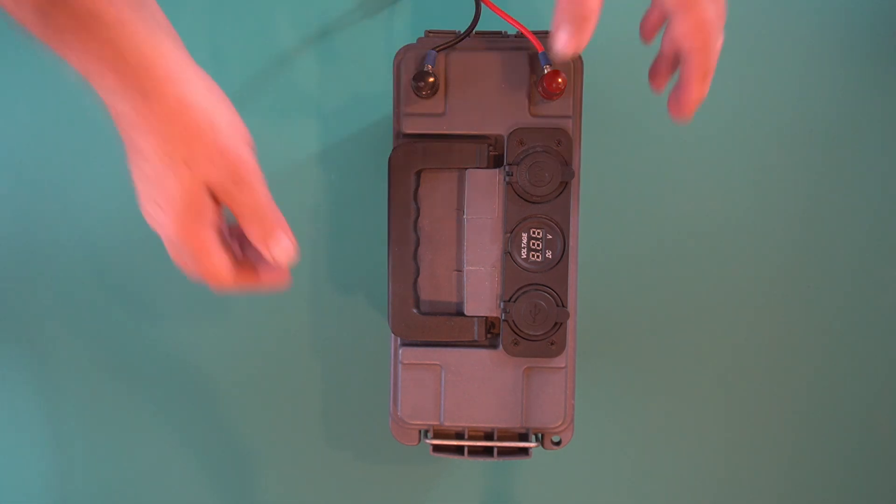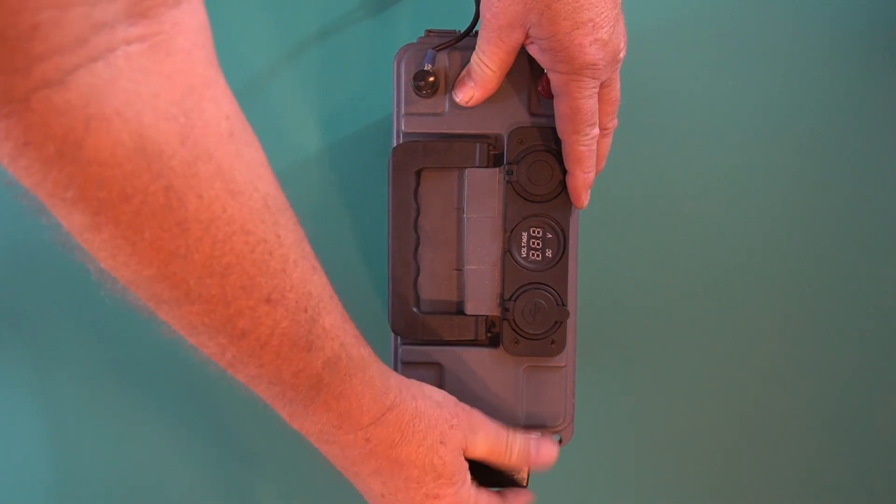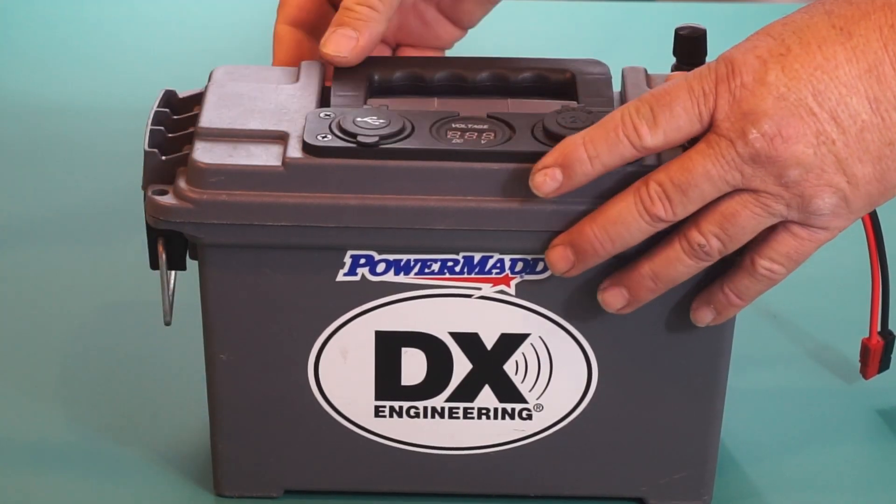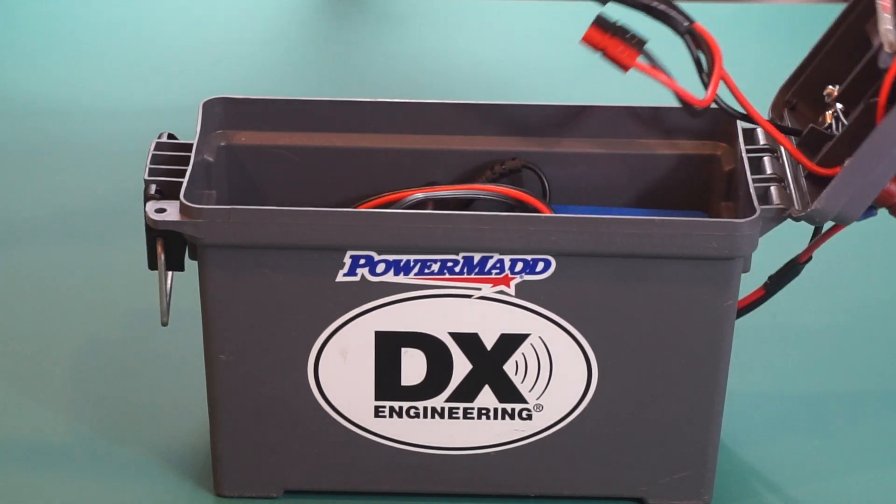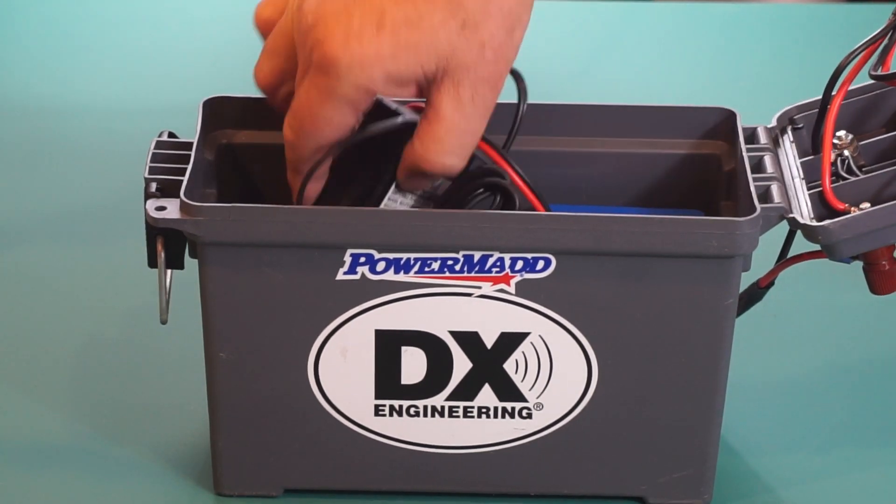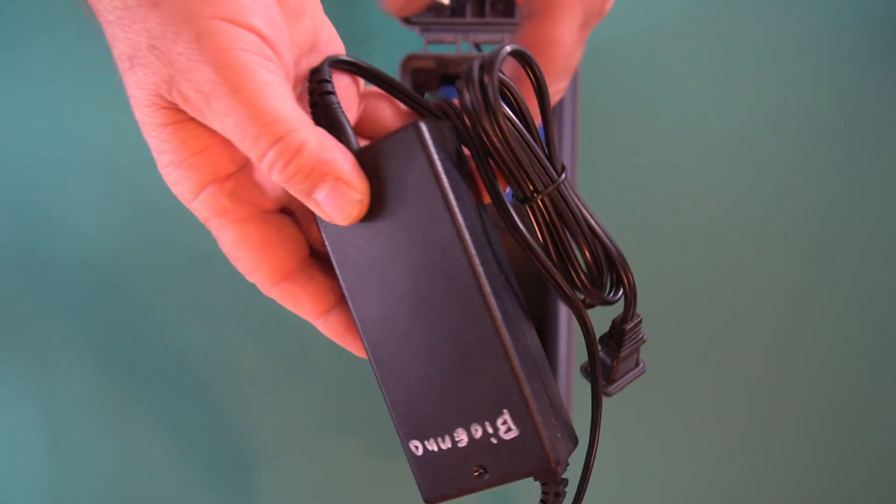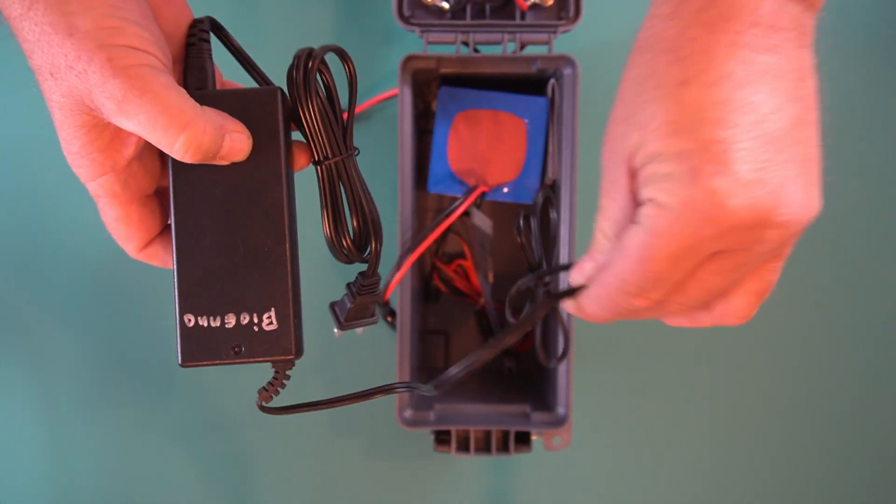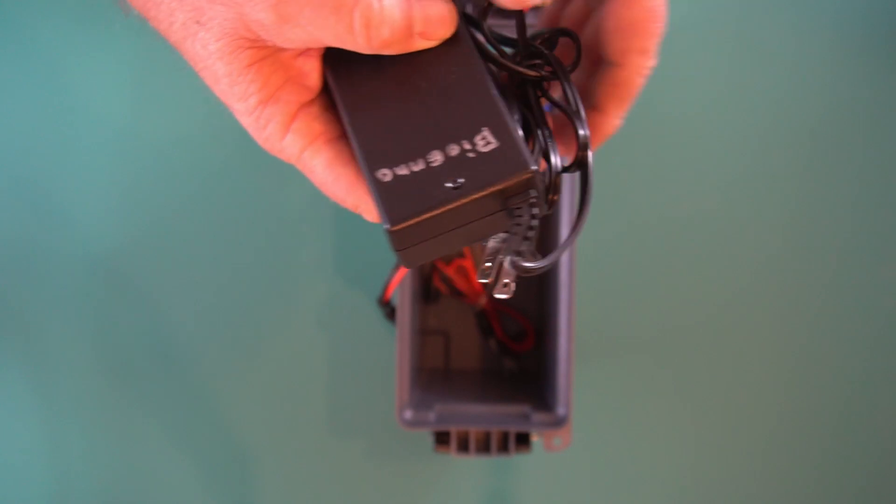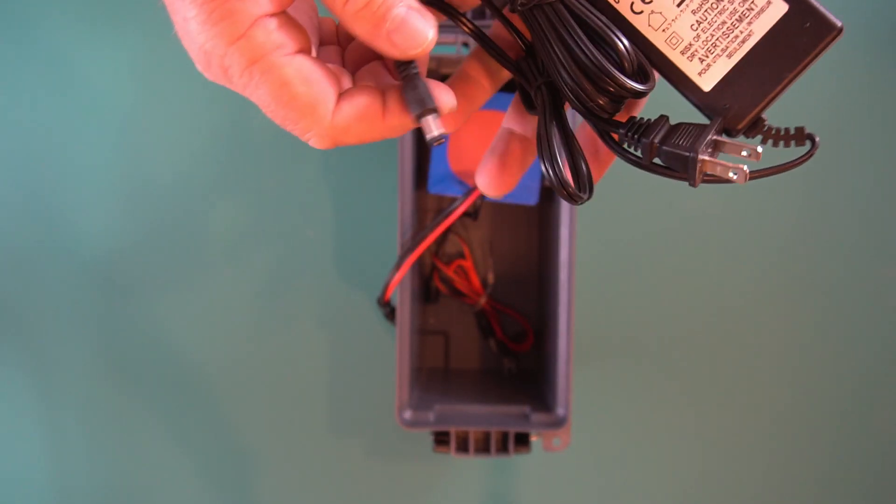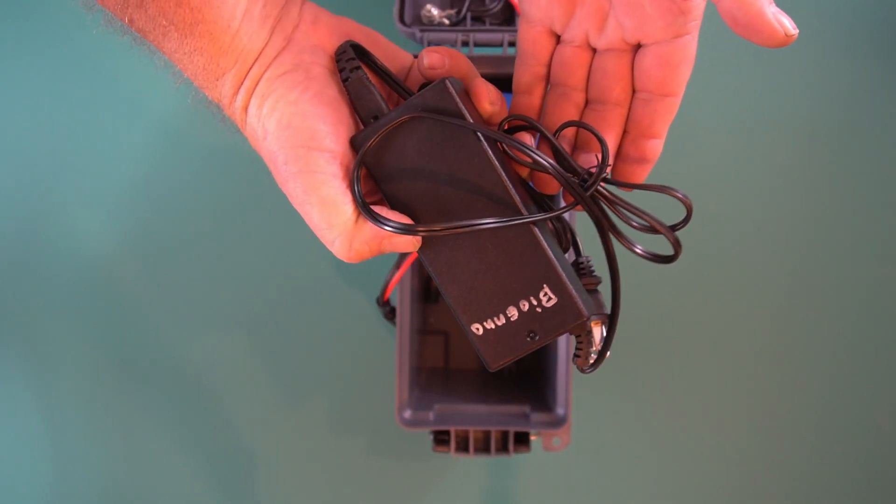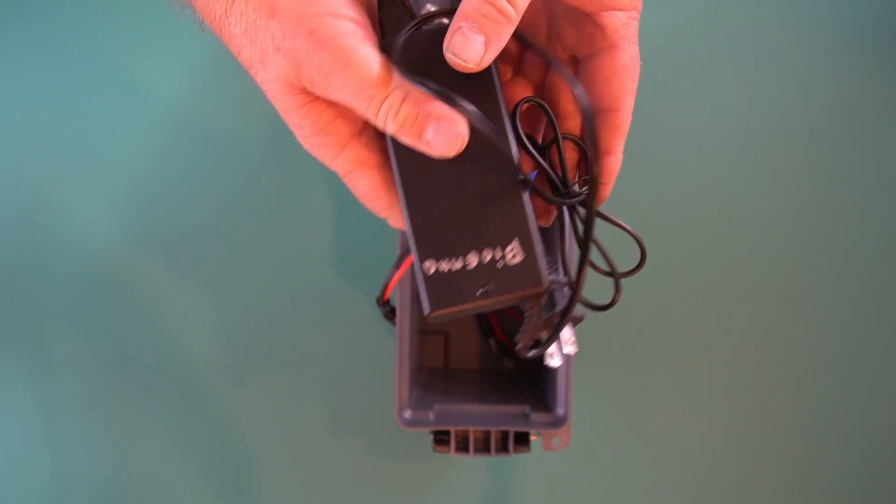Now in the box I carry just so I don't lose it, this is the battery charger for the Bioenno battery. I have a 9 amp hour Bioenno battery lithium and this is the charger that charges that and I keep that in the box so I don't lose it.